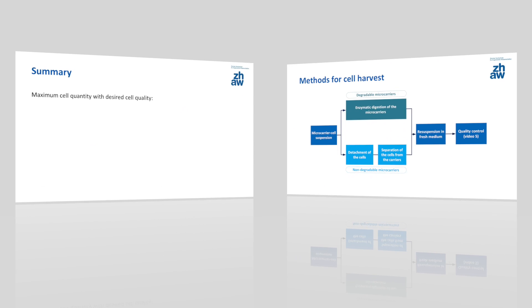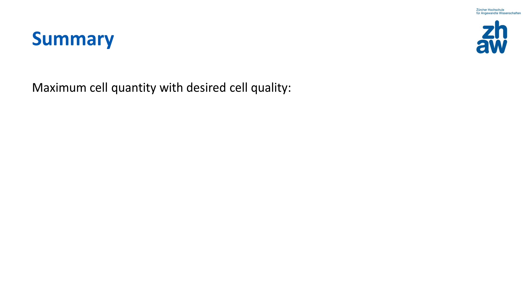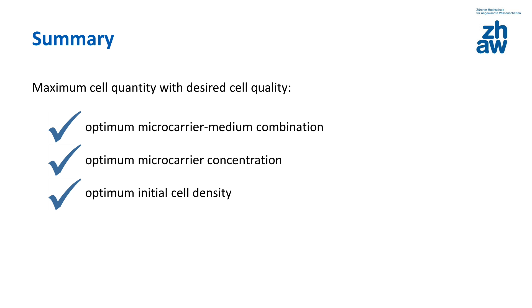It is important to take the following into account when expanding HMSCs from adipose tissue in the univassel SU so that maximum cell quantity with desired cell quality can be achieved. Firstly, the optimum microcarrier-medium combination. Secondly, the optimum microcarrier concentration, and finally, the optimum initial cell density. Furthermore, we recommend that the bioreactor is operated at the lower level on the just suspended impeller speed. This is referred to as the NS1U criterion and ensures tolerable shear stress for this application. Taking this parameter into account avoids the diffusion limitations which can result from large microcarrier aggregate sizes and influence the harvesting point. How this criterion can be determined is described in video number 2.